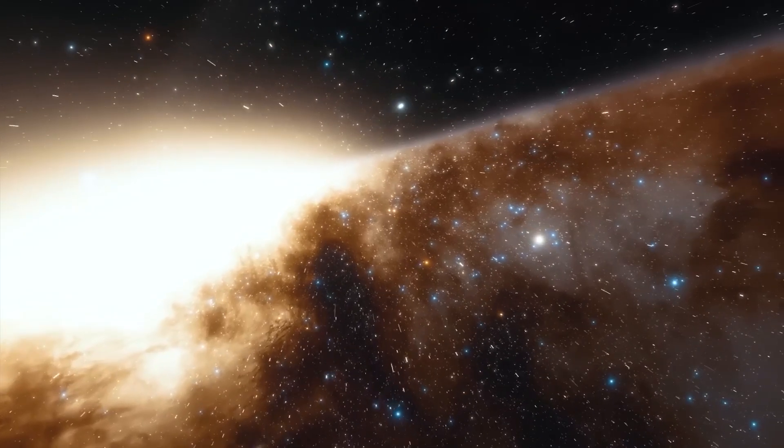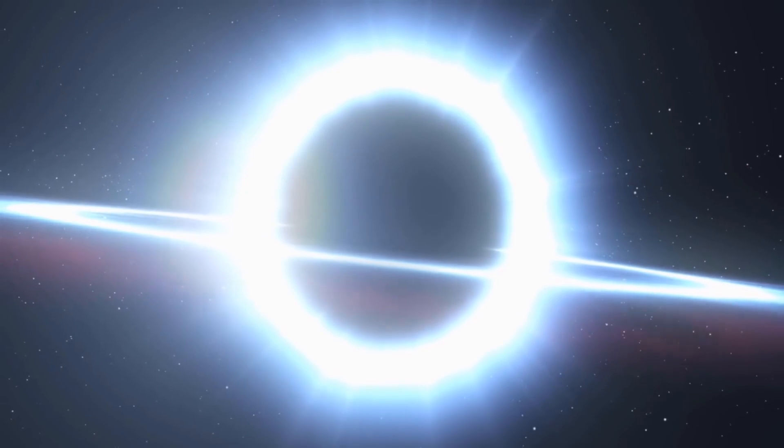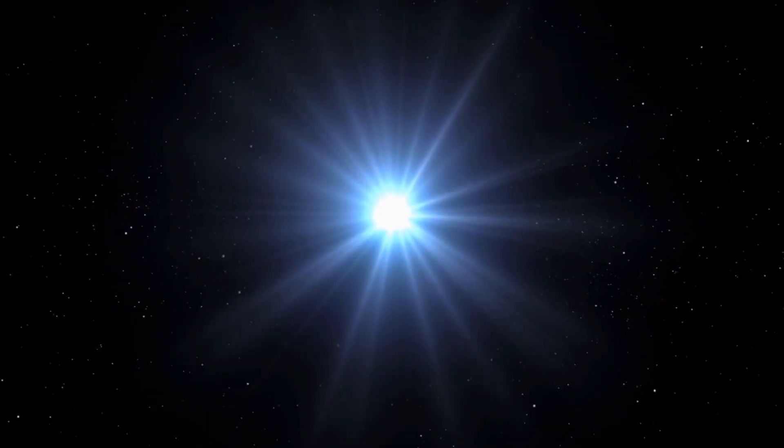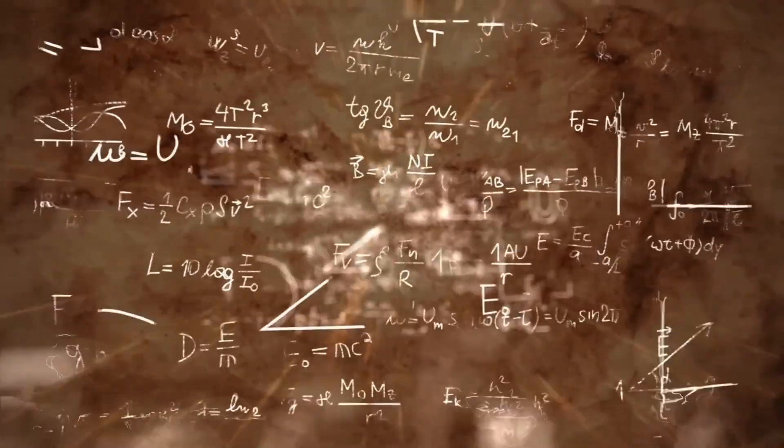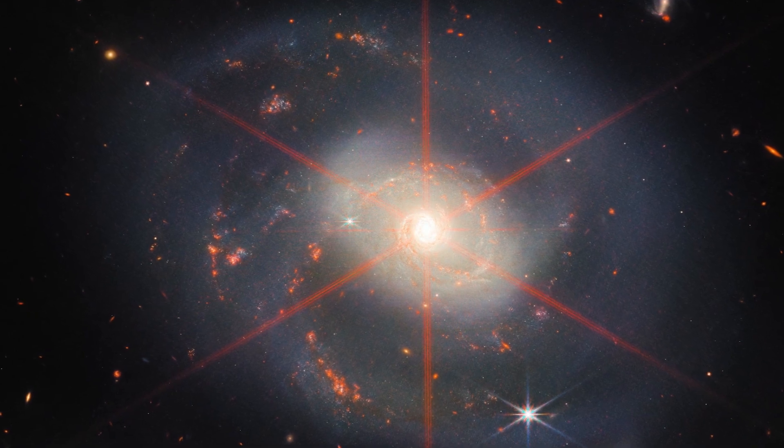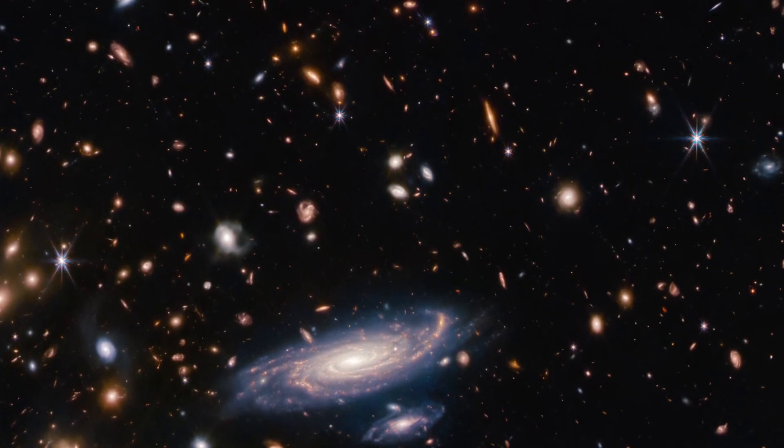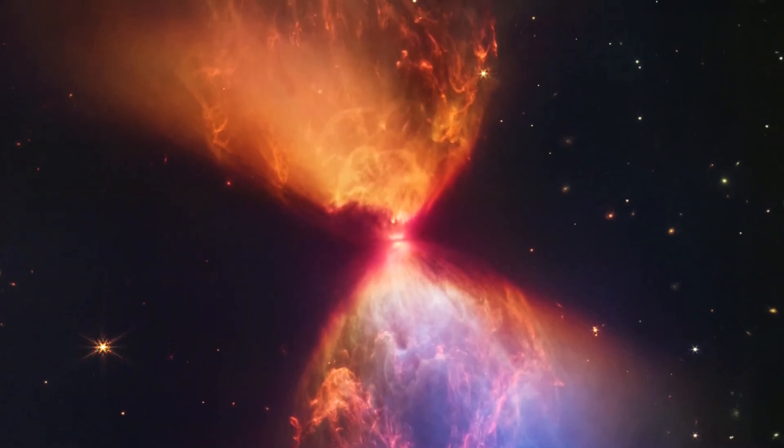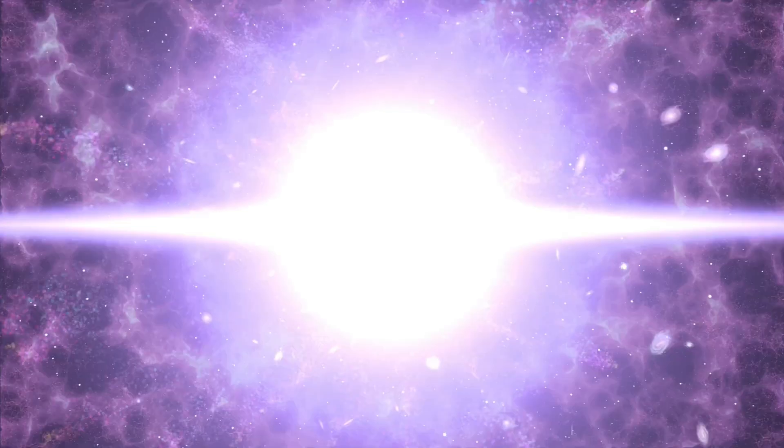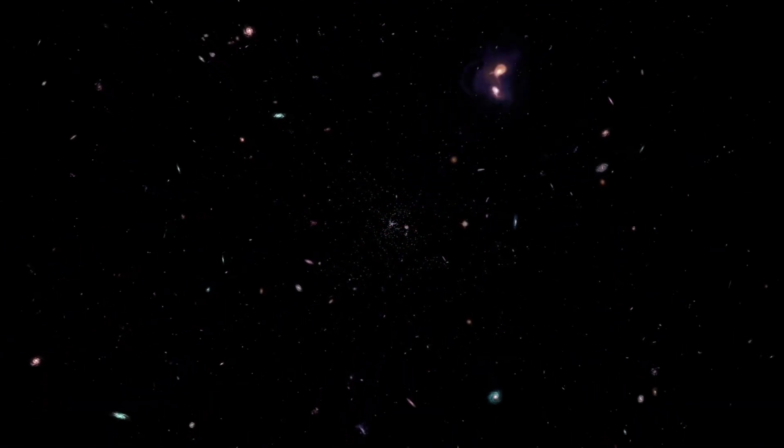Moreover, the smoothness of these galaxies is totally unexpected. According to the Big Bang Theory, galaxies should show irregularities and variations in their structures due to the dynamics of their formation and evolution. However, the images reveal unusually smooth galaxies without the level of complexity and roughness that one would normally expect to see in galaxies of their age. This defies the expected time sequence for the formation and evolution of galaxies within the framework of the Big Bang Theory.